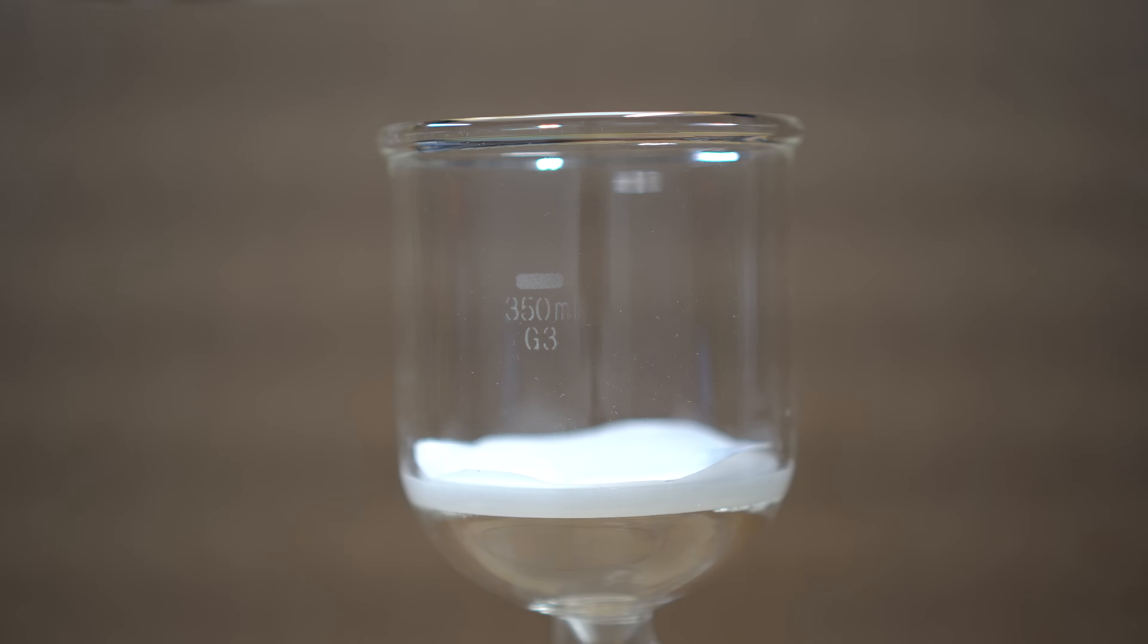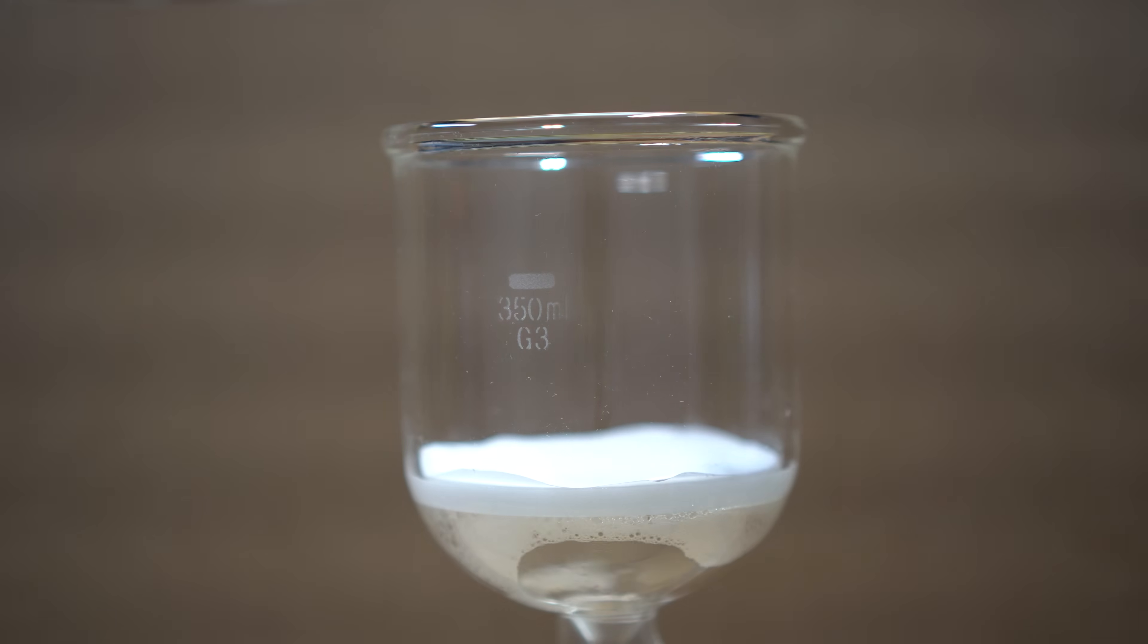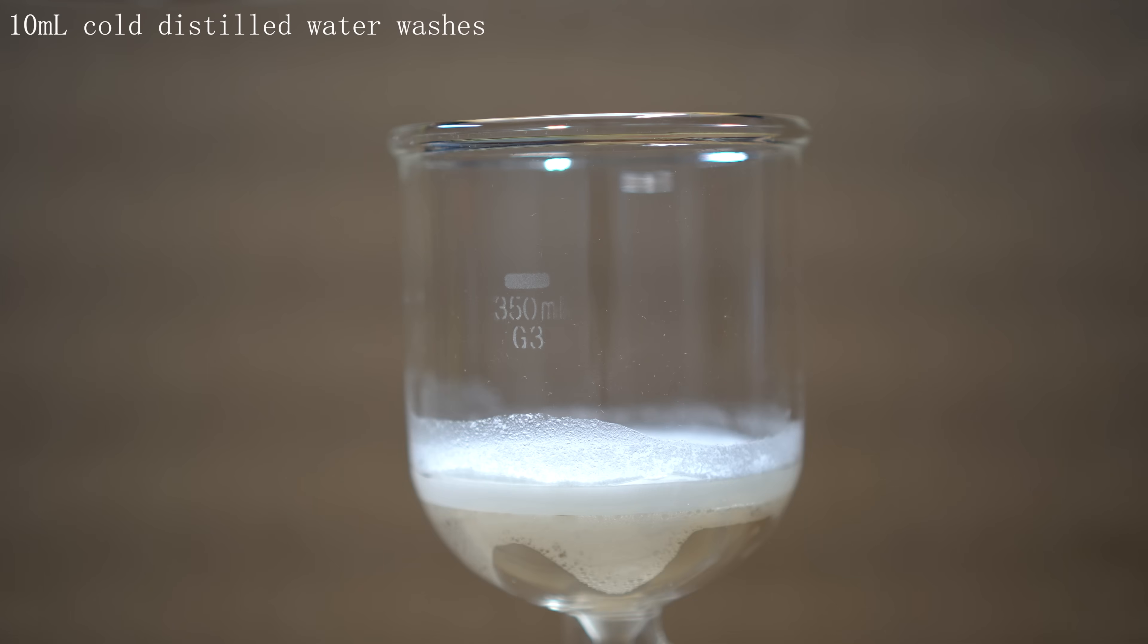I then set up a vacuum filtration with a medium flow filter paper and poured the crystals onto it. I then washed the flask two more times with about 10 milliliters of cold distilled water. After that, I left it running for about 10 more minutes to dry the crystals as much as possible.